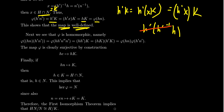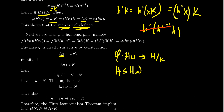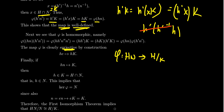Next we show φ is surjective. Recall φ maps HN to H/K. Every element h in H can be written as h·e in HN, so φ(h·e) = hK. Since h is an arbitrary element of H, hK is an arbitrary element of H/K. So φ is surjective — this is essentially a triviality.